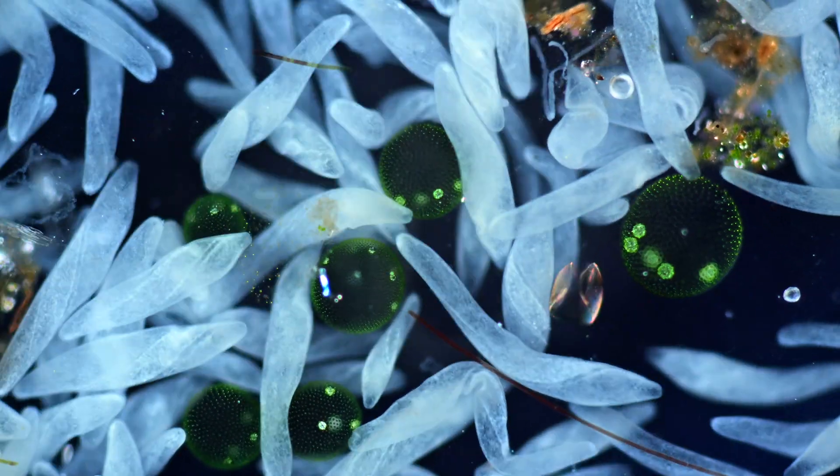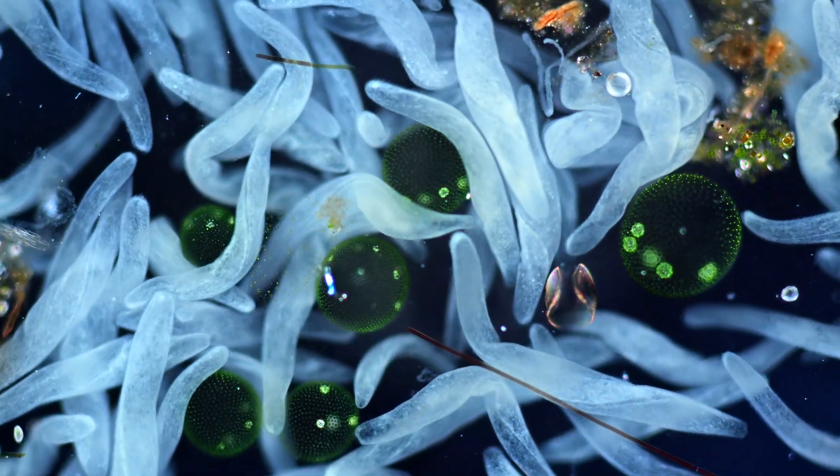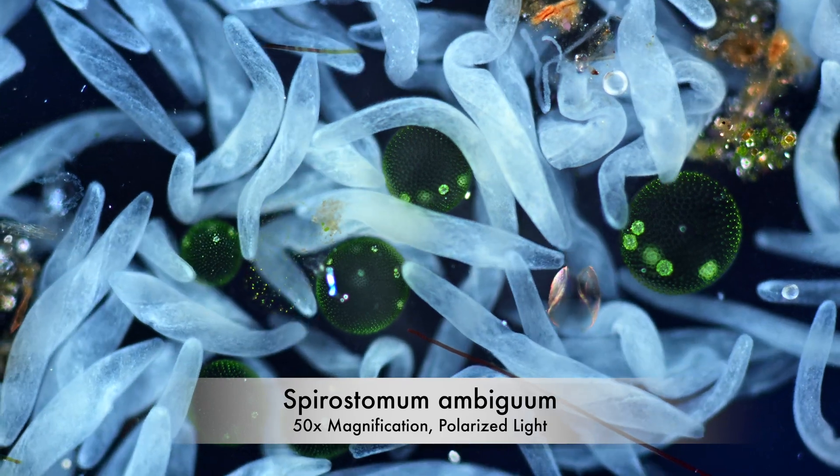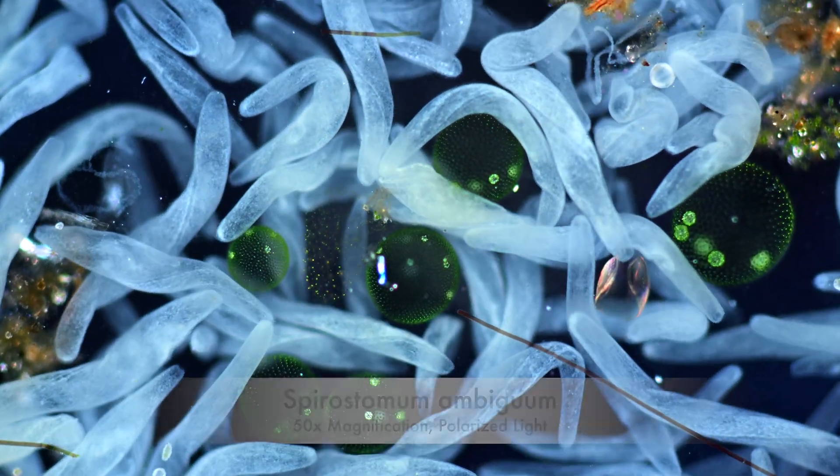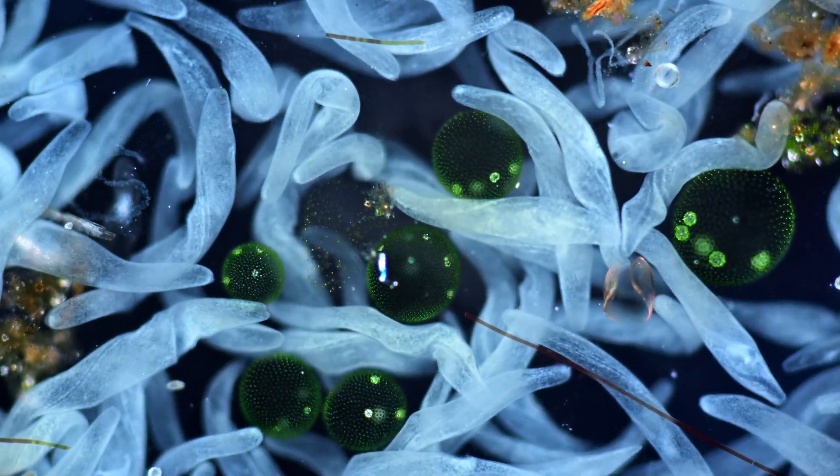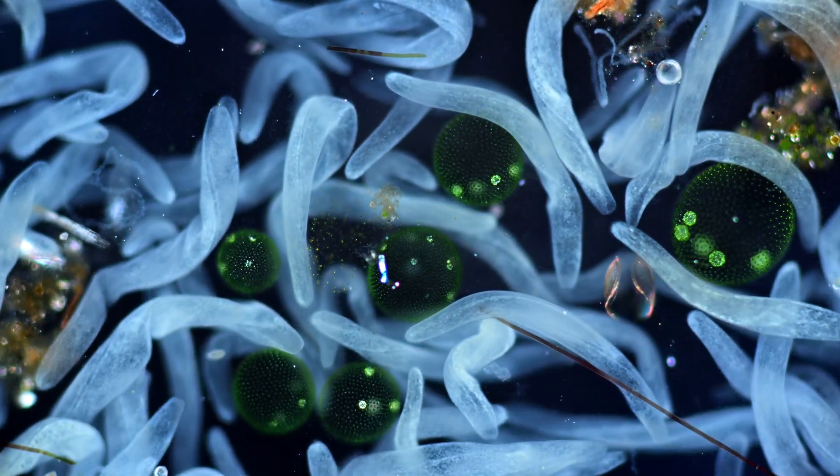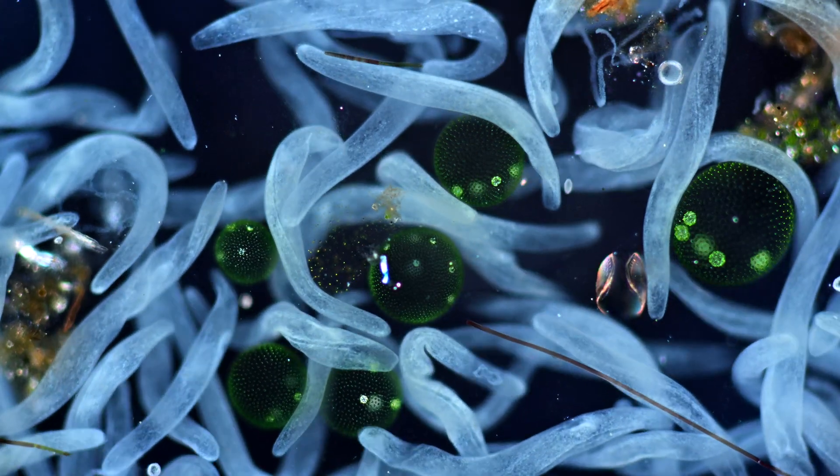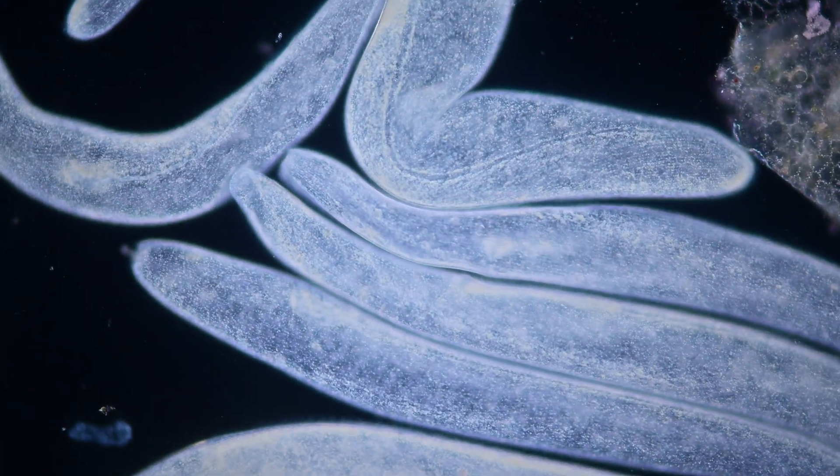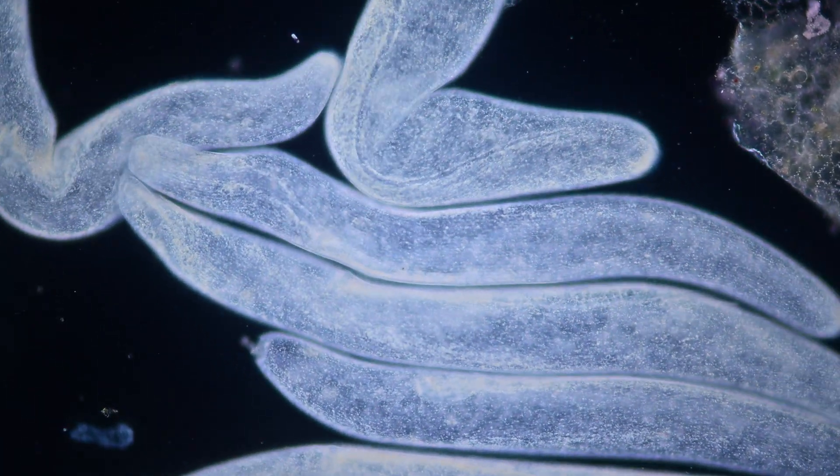This communication theory is very plausible because Spirostomum is a social ciliate. Several times a day hundreds of these creatures gather in blob-like colonies. It is not clear what the purpose of these gatherings are. One possible explanation for these gatherings might be sexual reproduction or also exchange of some nutrients.